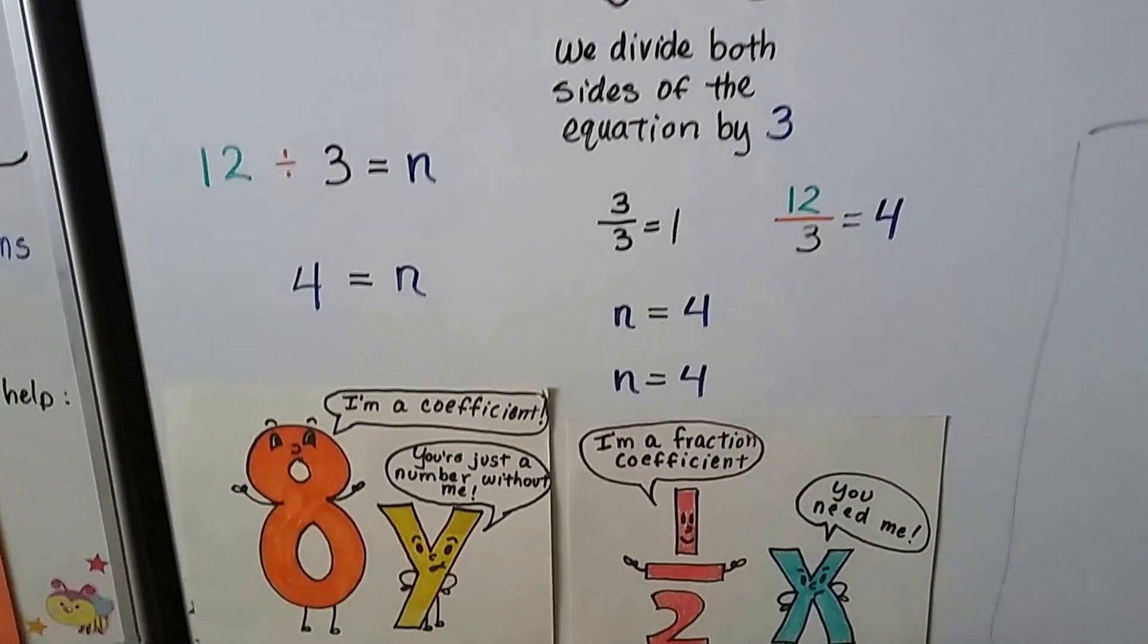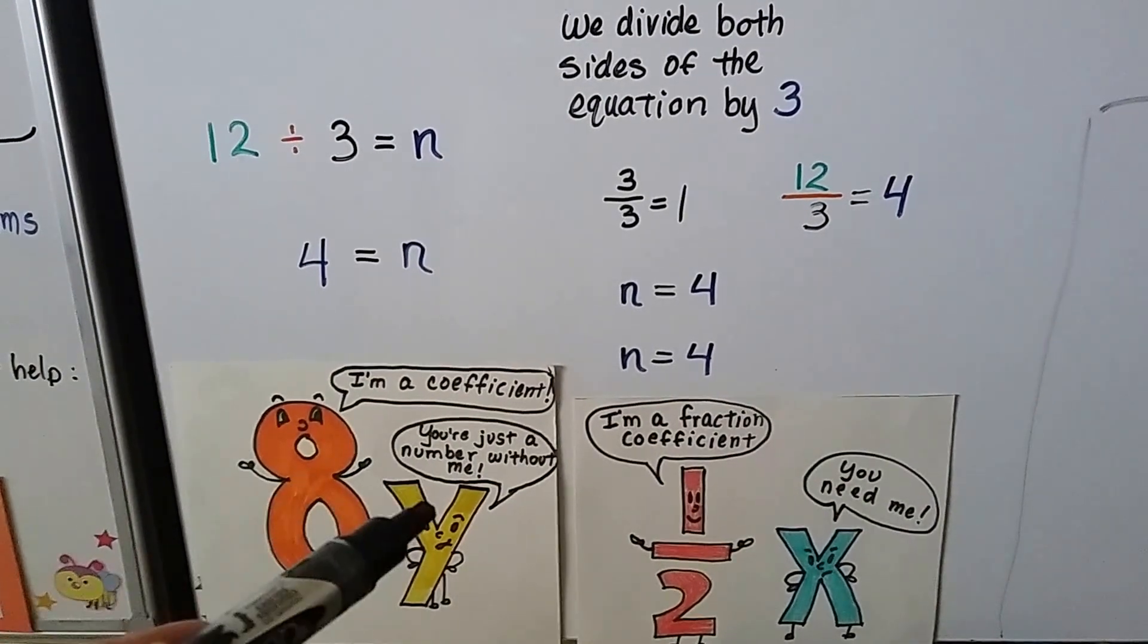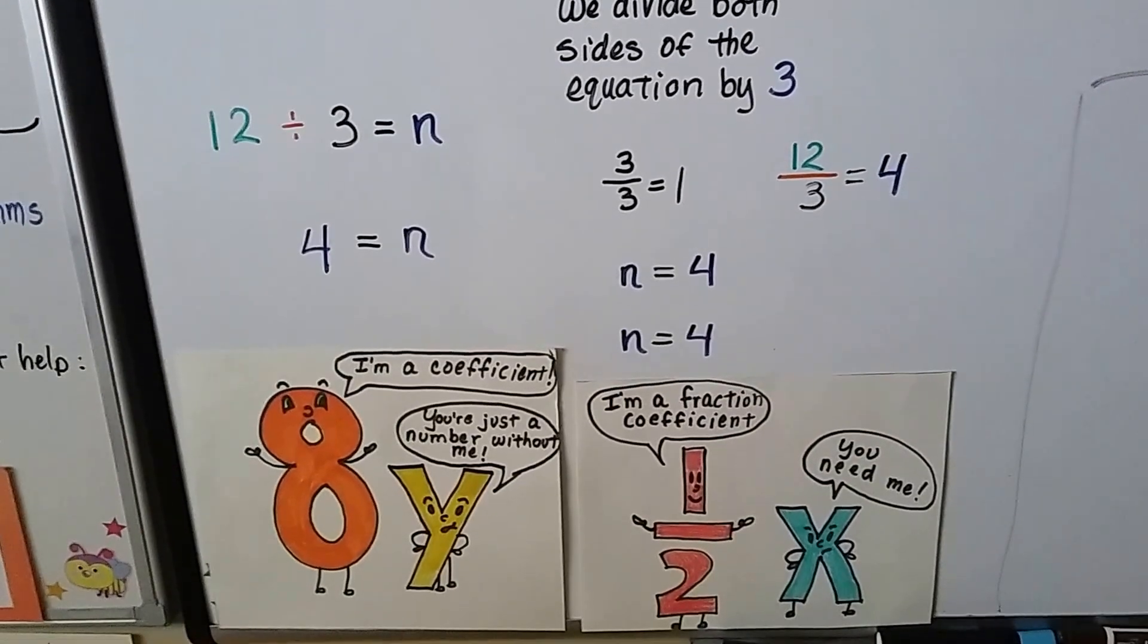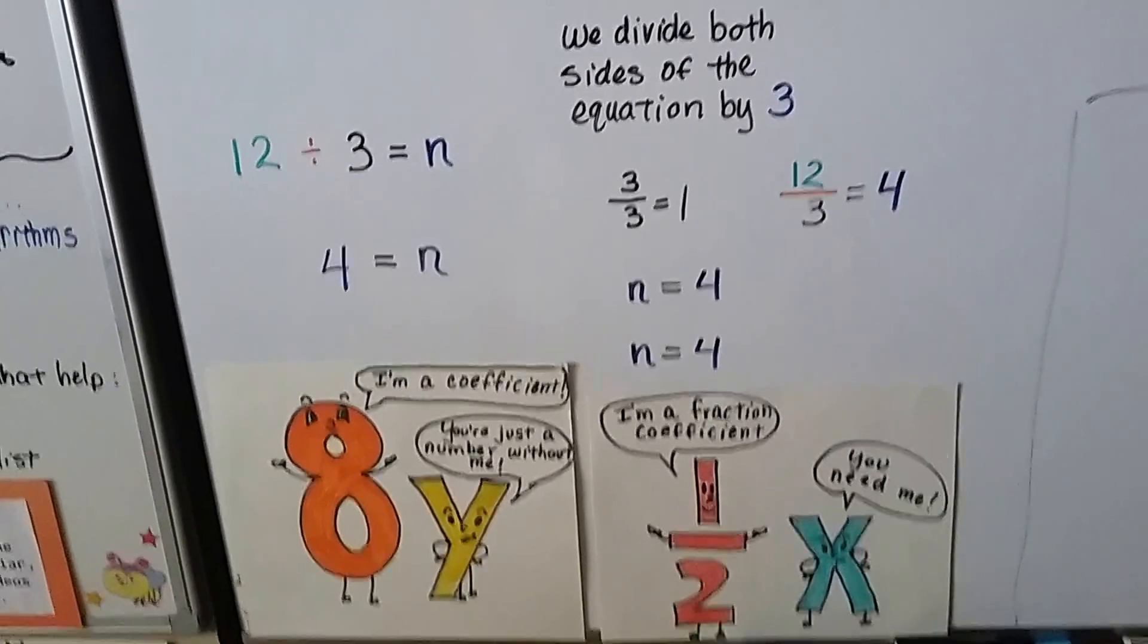Okay? So now we know n equals 4. So the number in front of the variable is the coefficient. And it can even be a fraction. We can have a fraction coefficient.